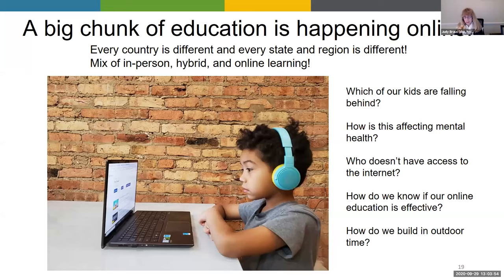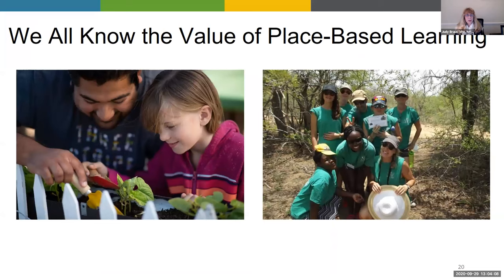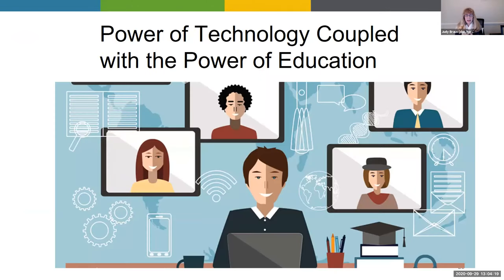There are a lot of questions that come with online learning: What is good online learning? Who doesn't have connections? How do we measure the effectiveness of what we're doing? How is online learning affecting young people and adult learners' health — mental health as well as physical health from sitting in a chair all day? We also know the value of place-based learning and how do we move that online?